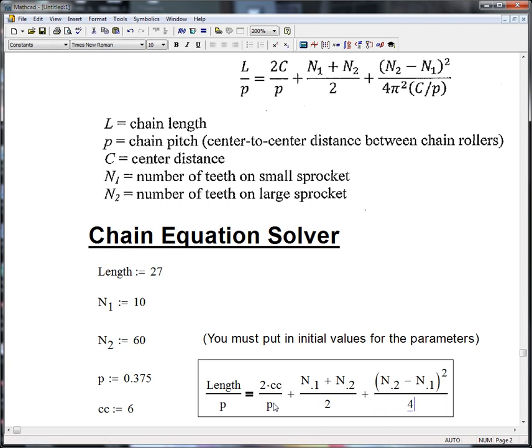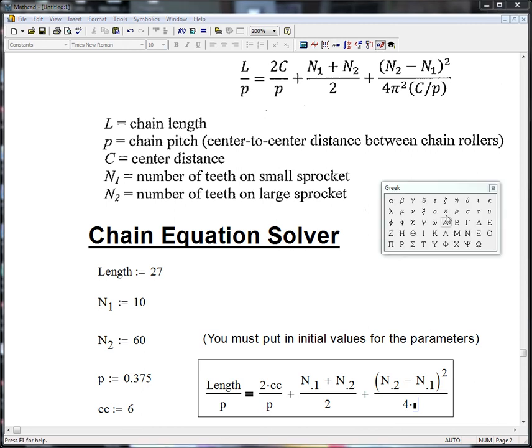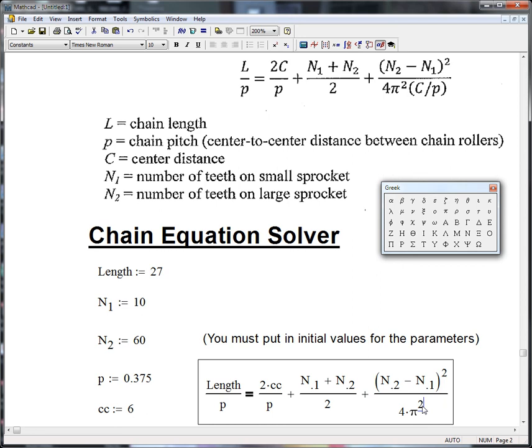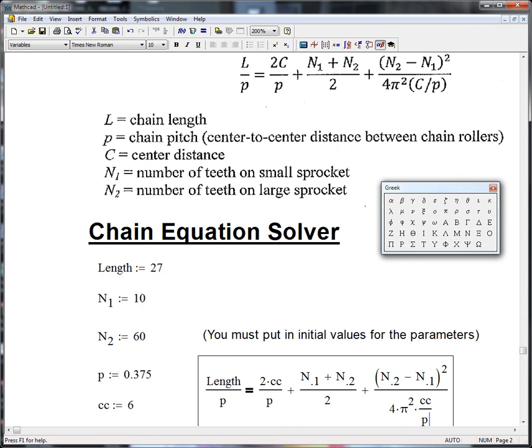Okay, so now we have 4 times, and I just had to turn on the Greek toolbar here. So there's pi and that's squared and then hit space bar to get out of the exponent. And then we'll go times CC and this time we do want that over P. And so that's it.